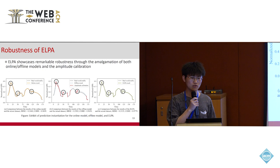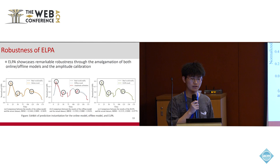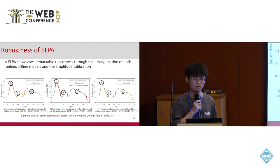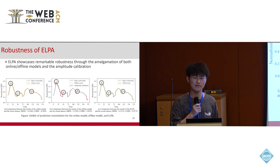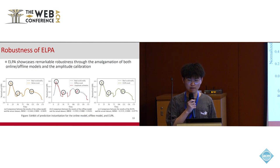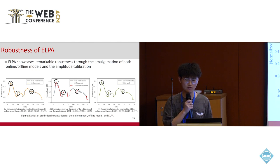ERPA also demonstrates exceptional robustness. This figure presents an example of workload data from a representative application. In Figure A, although online models show high prediction accuracy in most cases, they exhibit a noticeable lag issue in the burst interval marked with a circle. Figure B shows that offline models can predict sudden load increases promptly, but there is a clear discrepancy between the prediction results and the actual data. In Figure C, by integrating both online and offline models and applying amplitude calibration, ERPA showcases remarkable prediction accuracy and robustness.